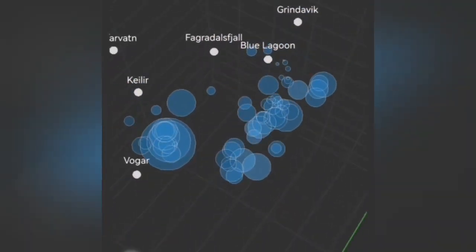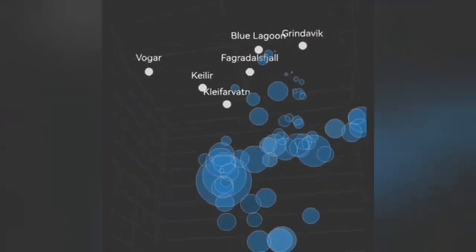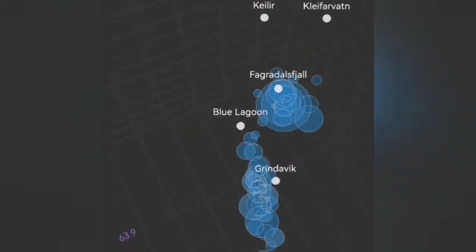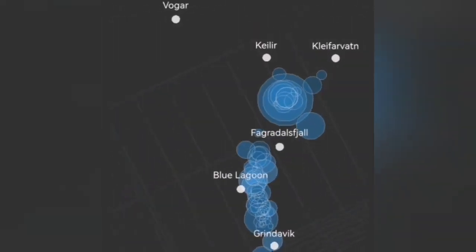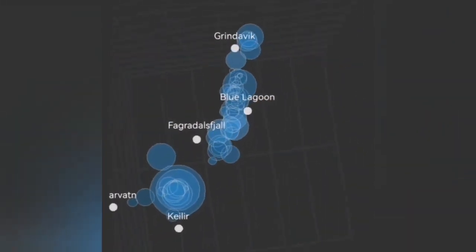The latest seismogram, depth of the earthquake, shows that we have at the depth of 5 km, and now reducing, some earthquake activity. This is the Grindavik, you can see that.